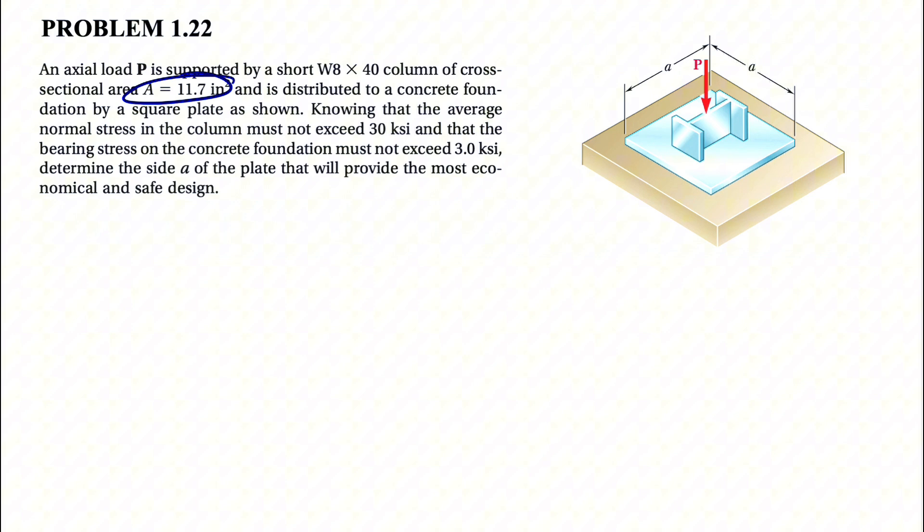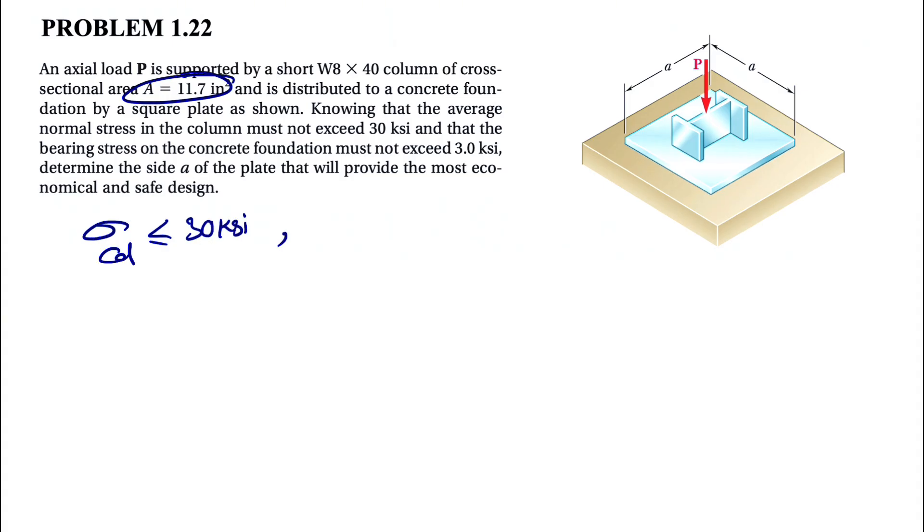The first given is that the average normal stress in the column cannot exceed 30 KSI. We also know that the bearing stress on the concrete must not exceed 3 KSI.